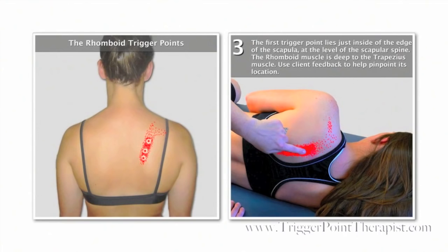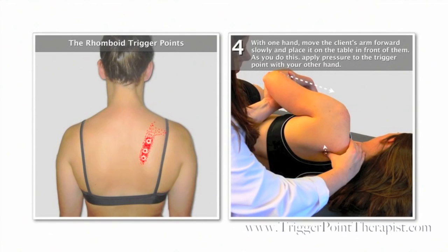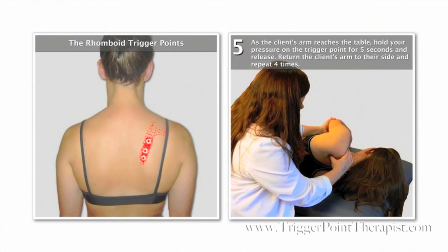All three rhomboid trigger points refer pain along the inside border of the scapula. With one hand, move the client's arm forward slowly and place it on the table in front of them. As you do this, apply pressure to the trigger point with your other hand. As the client's arm reaches the table, hold your pressure on the trigger point for five seconds and then release. Return the client's arm to their side and repeat this release procedure four times.